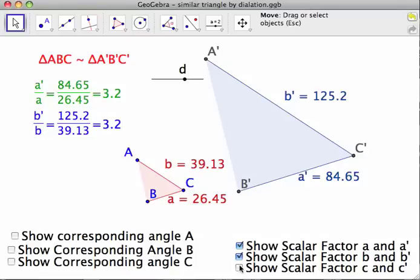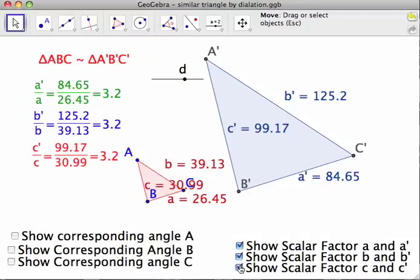And if C is the same proportionality, these two triangles are guaranteed similar. And as you can see, they are. So we've got 30.99 and 99.17, and it's 3.2.